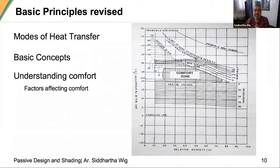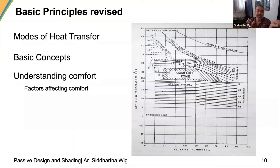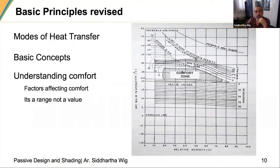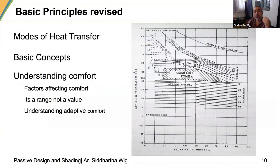Temperature, humidity and air movement affect both climate and human comfort. It is important to understand how these affect human comfort before we go into building design. Comfort is not a fixed value — it is a range. Whether you look at the psychrometric chart or the bioclimatic zone, you are always looking at a zone, and there can be various strategies to arrive at it.